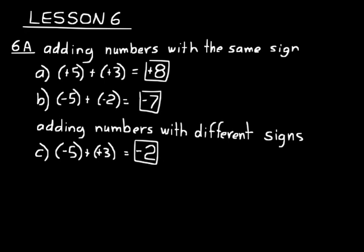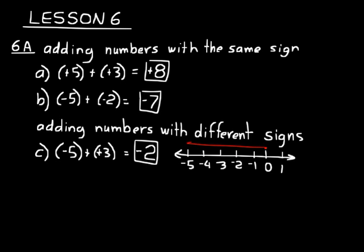If that doesn't make sense, use a number line. Starting at zero, go to the left five for negative five, then to the right three for positive three, and you end up at negative two — just like the answer shows. You can mark out: negative five, negative four, negative three, negative two, negative one, zero, one.